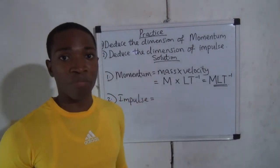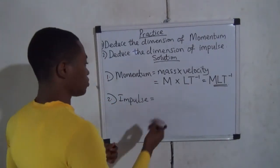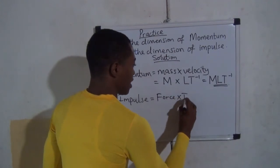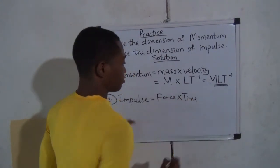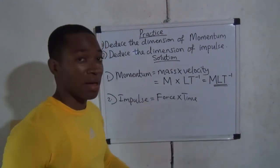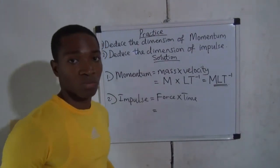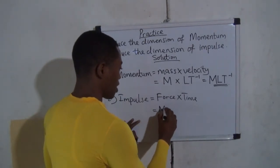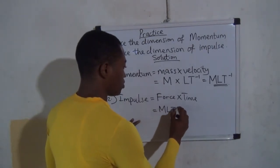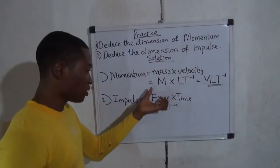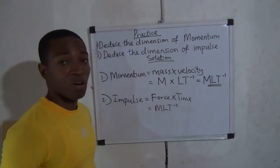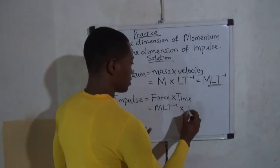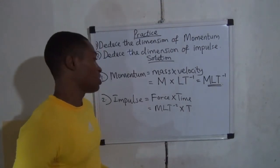The second one is impulse. What is the formula for impulse? Impulse is equal to force multiplied by time. What is the dimension of force? Force is MLT to the power of minus two. So the dimension of impulse is MLT to the power of minus two multiplied by the dimension of time.